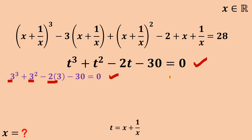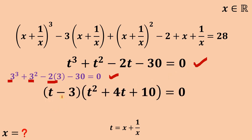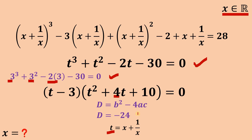So if we factor this out using factoring techniques, we get t minus 3 multiplied by t squared plus 4t plus 10 equals 0. Now, since x is a real number, t is a real number also. Getting the discriminant of the quadratic t squared plus 4t plus 10: b squared minus 4ac gives us 16 minus 4 times 1 times 10, which is 16 minus 40, so the discriminant is negative 24. Since the discriminant is negative, we don't get a real value of t from this quadratic equation.